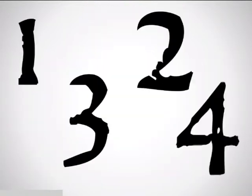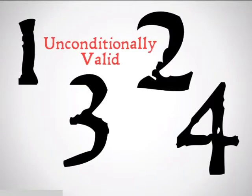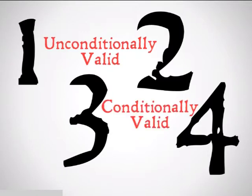That was all of the unconditionally valid forms of all four figures. These are the only forms that are going to be valid for Buhl. Next up, we're going to look at the conditionally valid forms — those are forms that are going to be valid for Aristotle, but only under certain conditions.